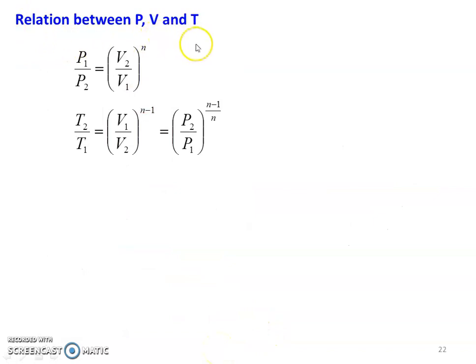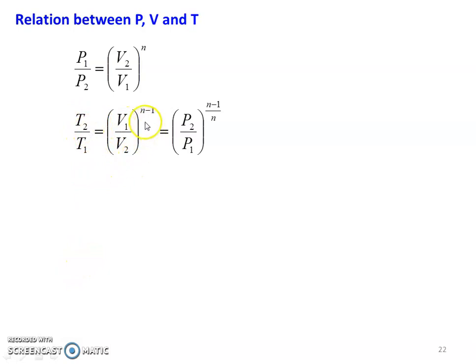The relation between pressure, volume, and temperature for the polytropic process: P1/P2 equals (V2/V1)^N. The difference between the polytropic process and the adiabatic process is only the power - gamma versus N; all other equations are similar. T2/T1 equals (V1/V2)^(N minus 1), which also equals (P2/P1)^((N minus 1)/N).